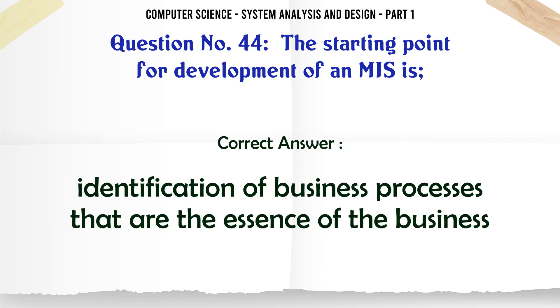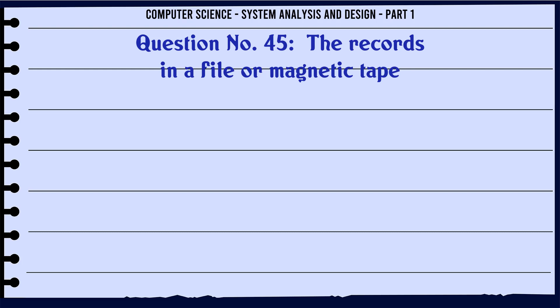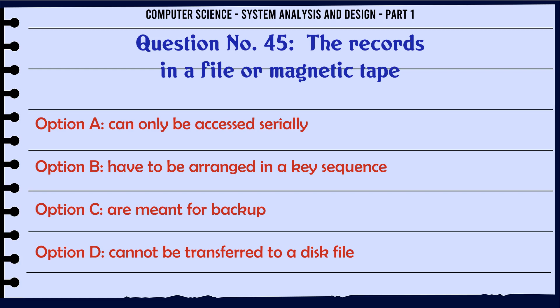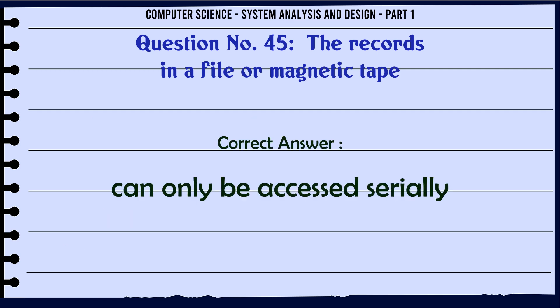The records in a file on magnetic tape: A. Can only be accessed serially. B. Have to be arranged in a key sequence. C. Are meant for backup. D. Cannot be transferred to a disk file. The correct answer is: Can only be accessed serially.